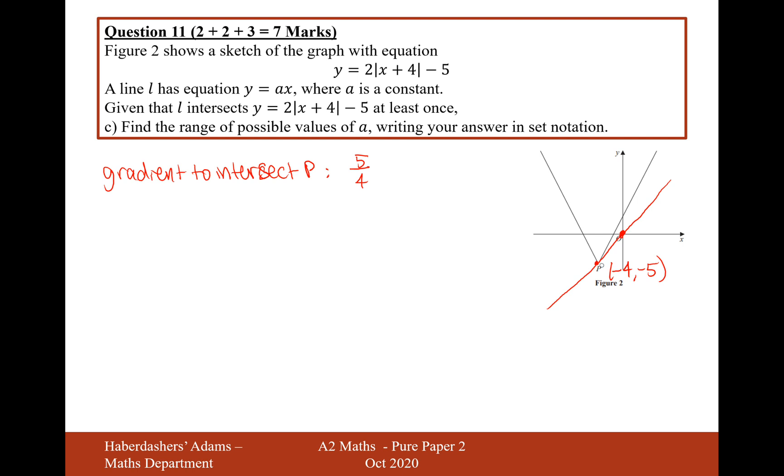And then anything greater than, so if it's slightly greater than 5 over 4, then it won't intersect the line at all. But then as soon as it gets to 2, it's going to now be a steeper gradient than this line here. So it's now going to intersect up in this top right area.